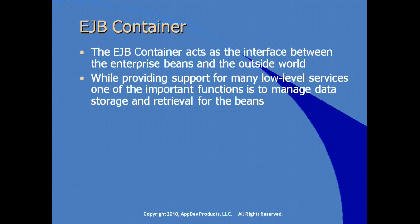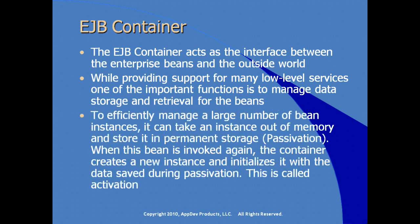While providing support for many low-level services, one of the most important functions is managing data storage and retrieval for deployed beans. To efficiently manage a large number of instances, the EJB container can take an instance out of memory and persist it — this is called passivation. When the bean is invoked again, the container creates a new instance and copies the saved data — this is called activation.